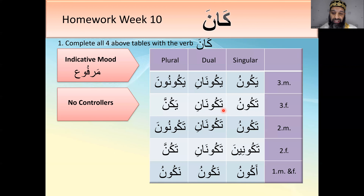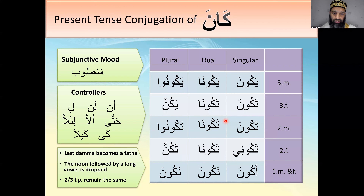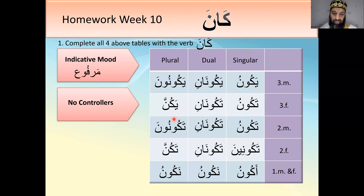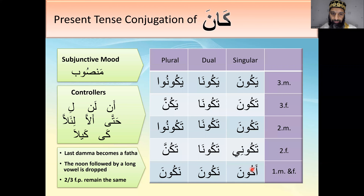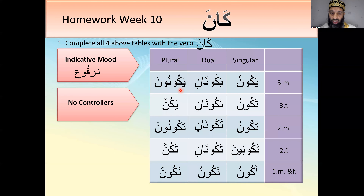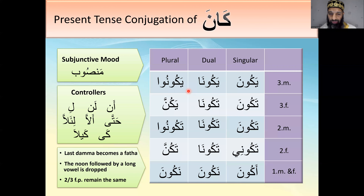The next table was mansoob. In mansoob you drop the noons, except the super strong plural women — they keep their noon. All the dhamma endings become fatha. So for example yakununa means the same as yakunu — they all were — it's just that a controller came in front of it and caused the noon to drop, but the word still means the same thing.